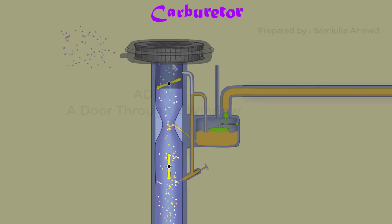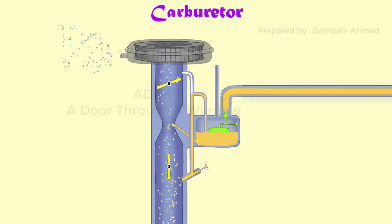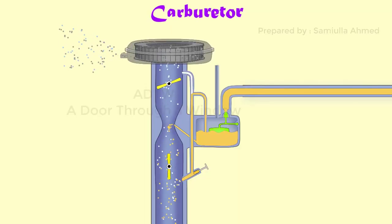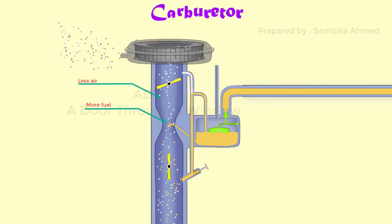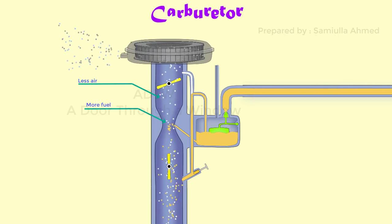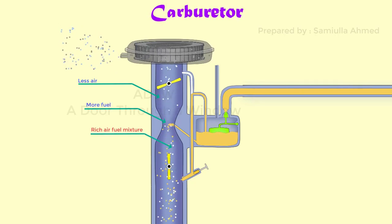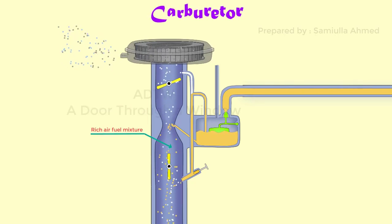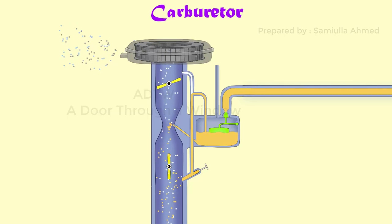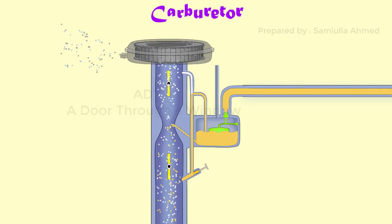Since the air supply is choked or blocked partially, this causes less air and more fuel to be drawn in, thus producing a rich air-fuel mixture. The choke valve is very helpful during cold starting of the engine.